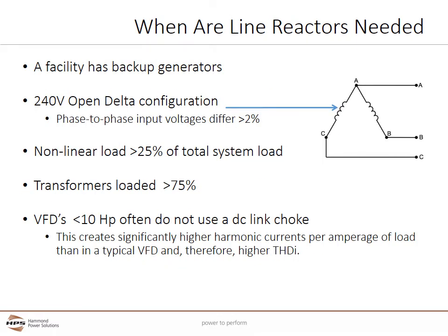Line Reactors should be considered if a facility has backup generators to aid in proper operation and minimum sizing. 240-volt open delta configurations can benefit from additional impedance. If the phase-to-phase input voltages differ more than 2%, consider adding line reactors. If the non-linear load is more than 25% of the total system load, at a minimum line reactors should be added.